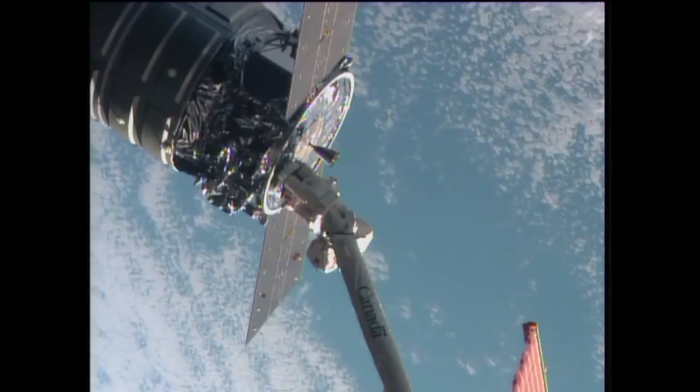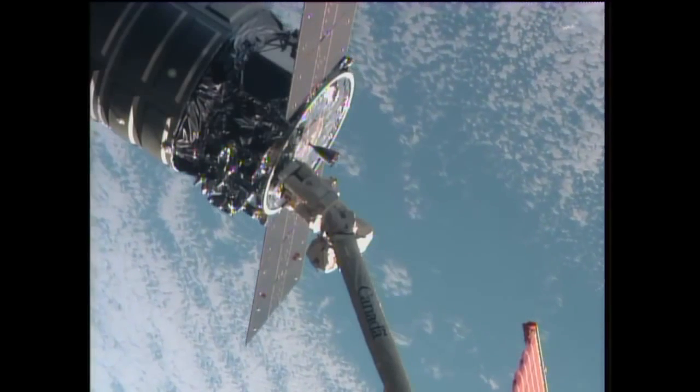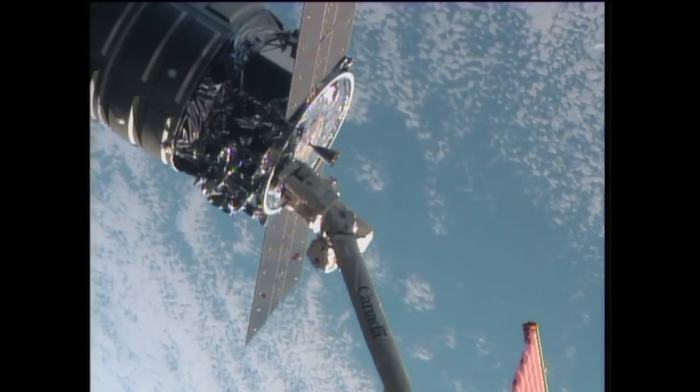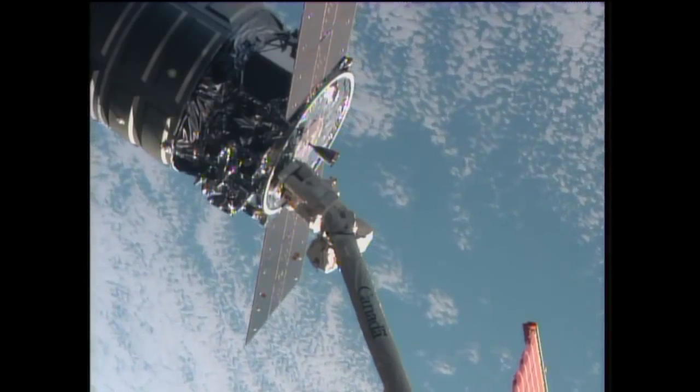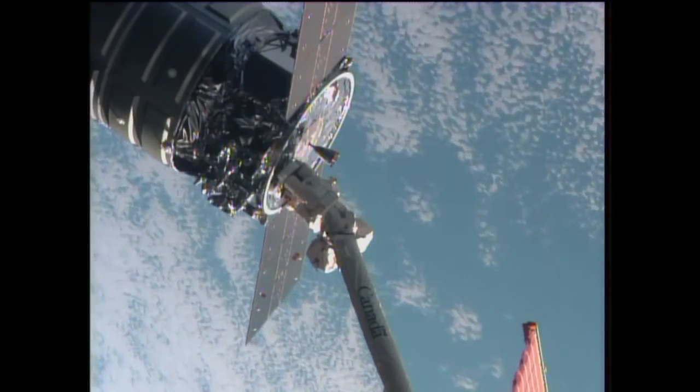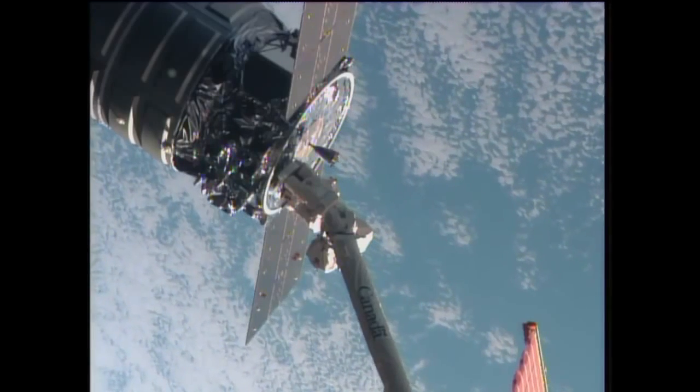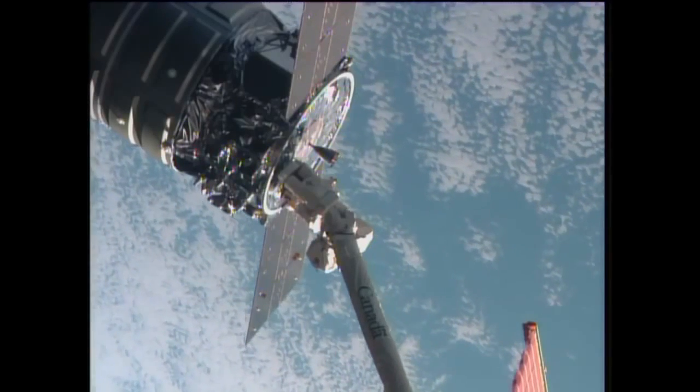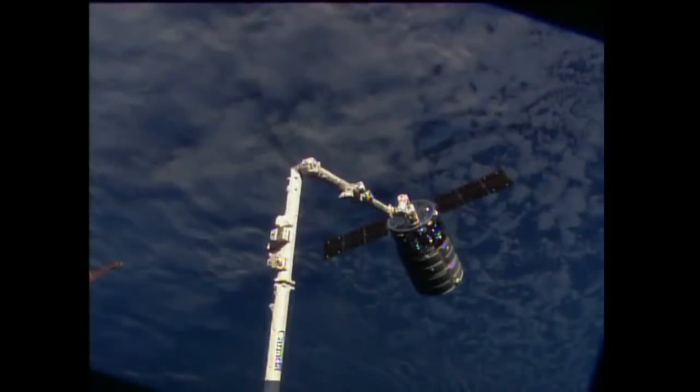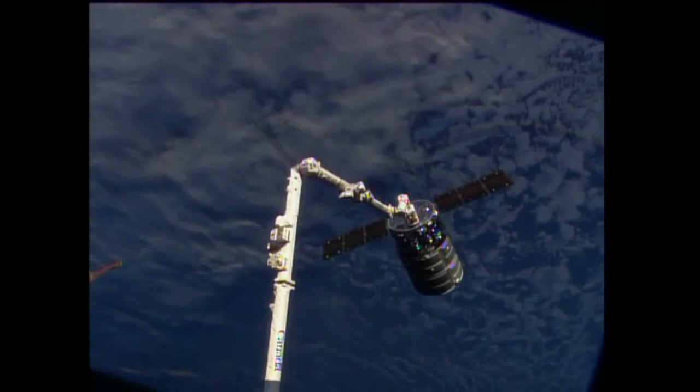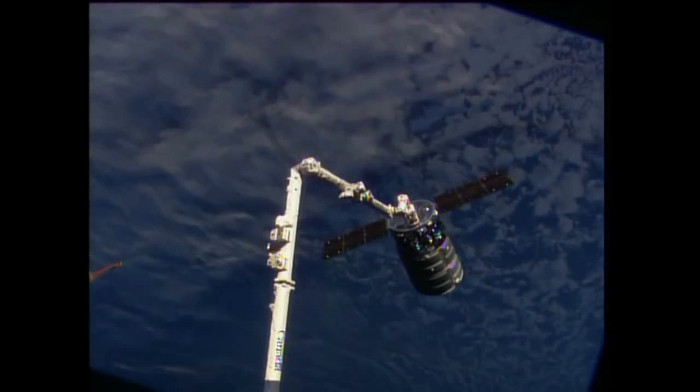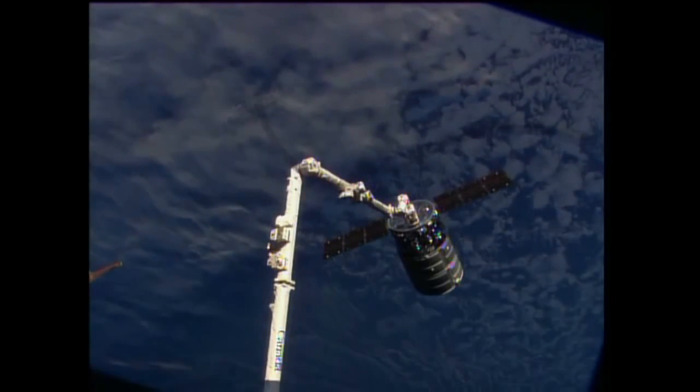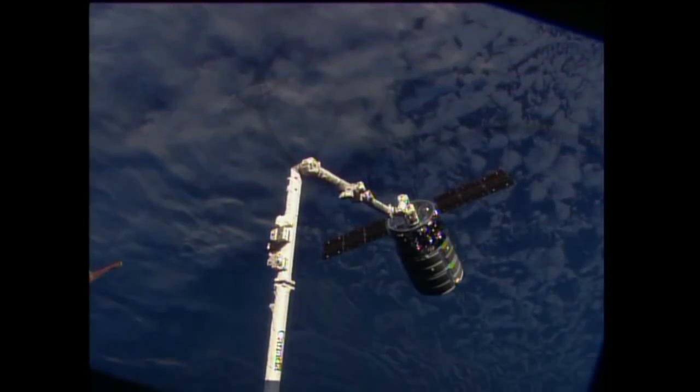Cygnus still holding out there at the 12-meter point away from the International Space Station. Successful capture at 6:01 AM Central Time, 7:01 AM Eastern Time. These two vehicles were high above the Indian Ocean, about to make a swing up toward the northeast over parts of Australia. Cygnus now attached to the space station's arm.